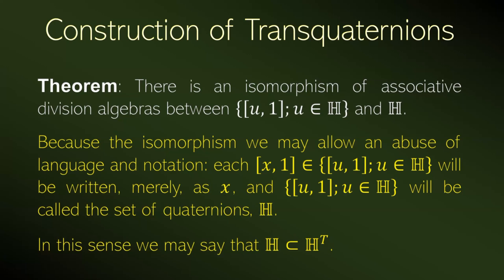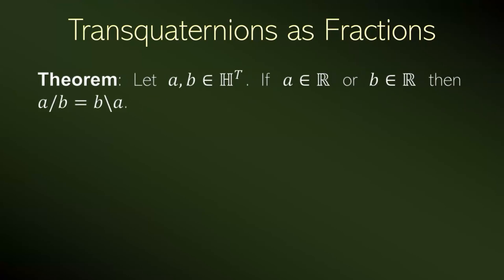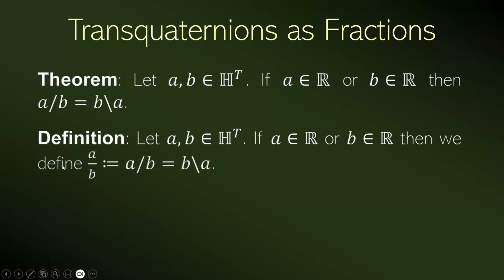We will see that all transquaternions can be seen as a fraction between quaternions. First of all, the right division and the left division where one of the numbers is a transquaternion and at least one of them is a real number — these two divisions are the same, the right and the left division. And because of this, we define only one division as usual.